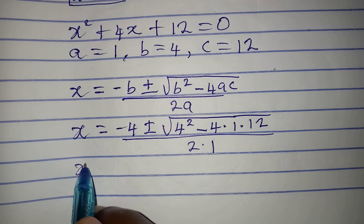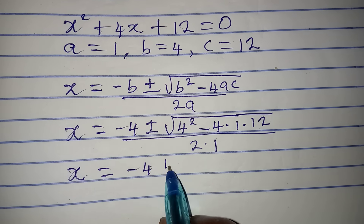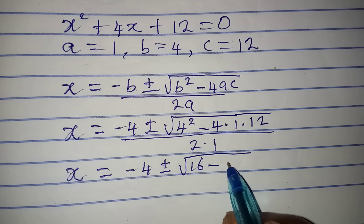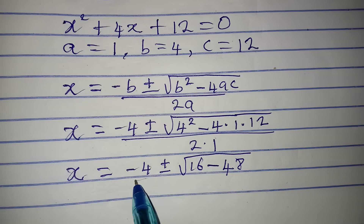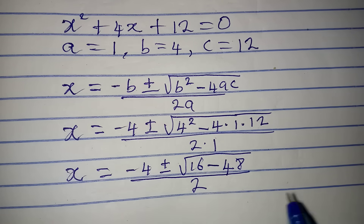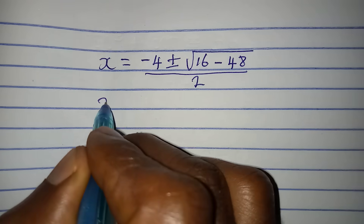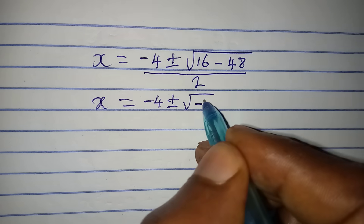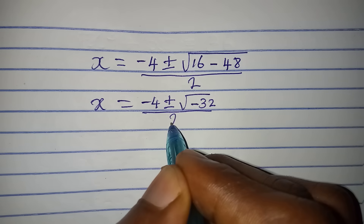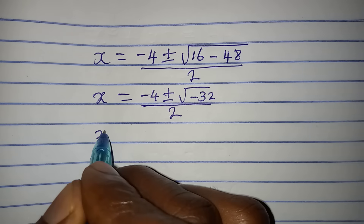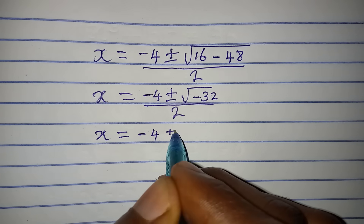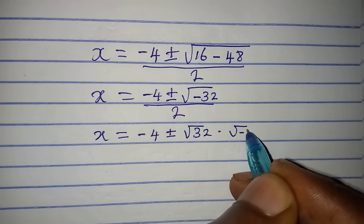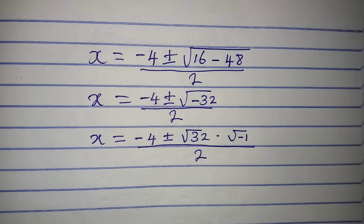Taking a step further: x equals minus 4 plus or minus square root of 16 minus 48, all over 2. Continuing, 16 minus 48 gives us minus 32, so x equals minus 4 plus or minus square root of minus 32, over 2. Now we have square root of 32 multiplied by square root of negative 1. And 32 is the same as 16 multiplied by 2, then multiplied by the square root of negative 1 which is i, all over 2.